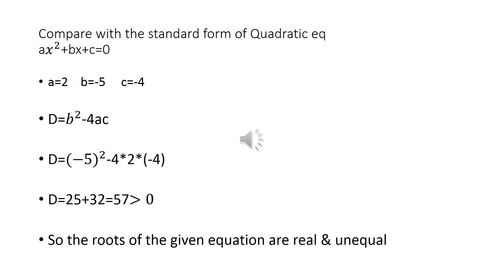On putting the values of b square minus 4ac, we will find that d equals 57 which is greater than 0. So, the roots of the given equation are real and unequal.